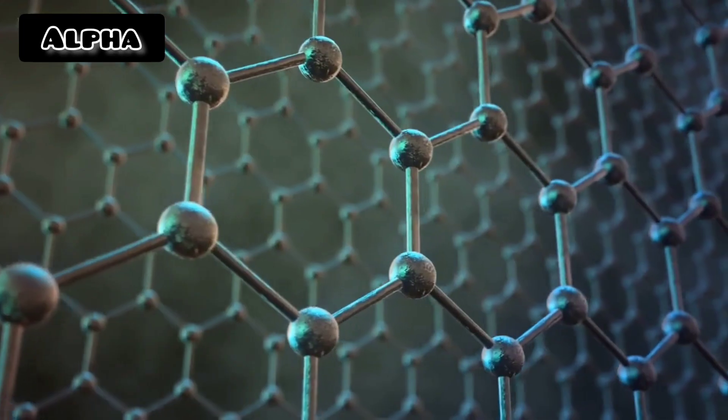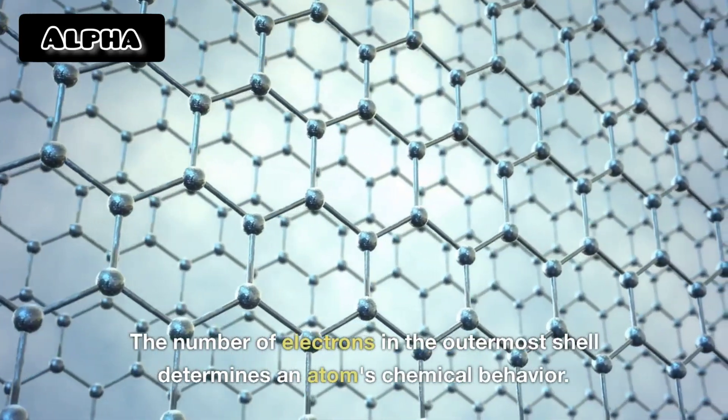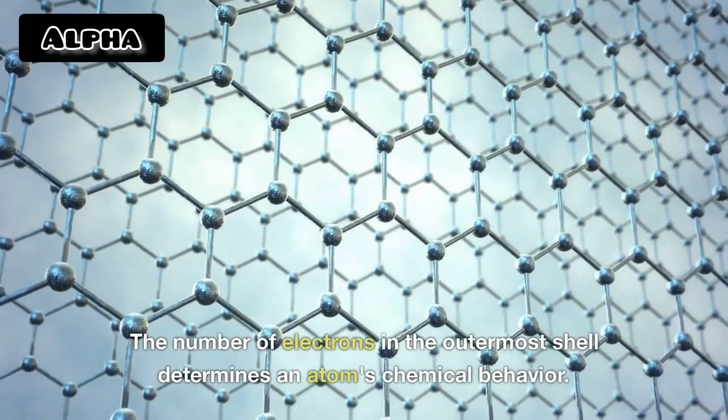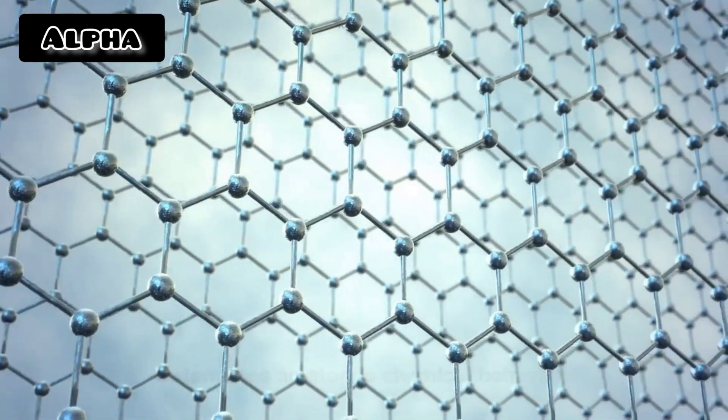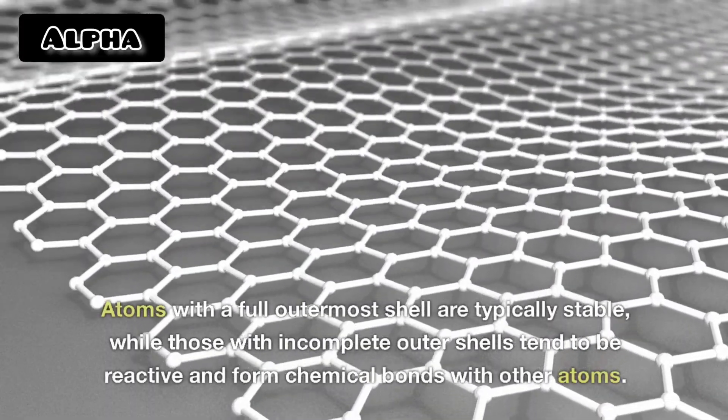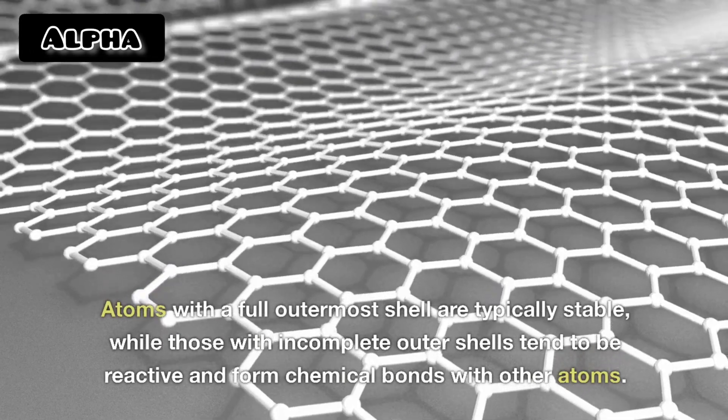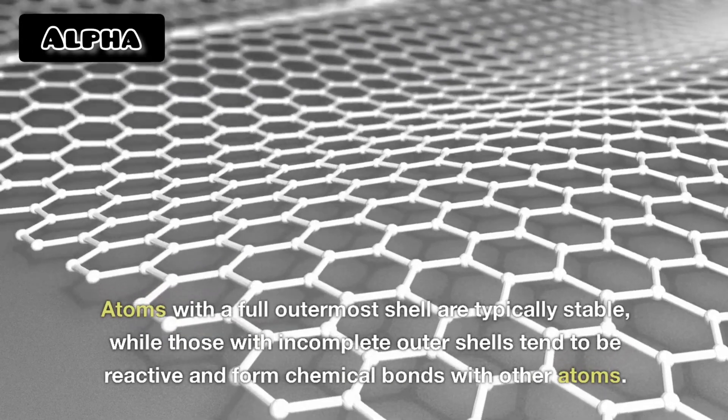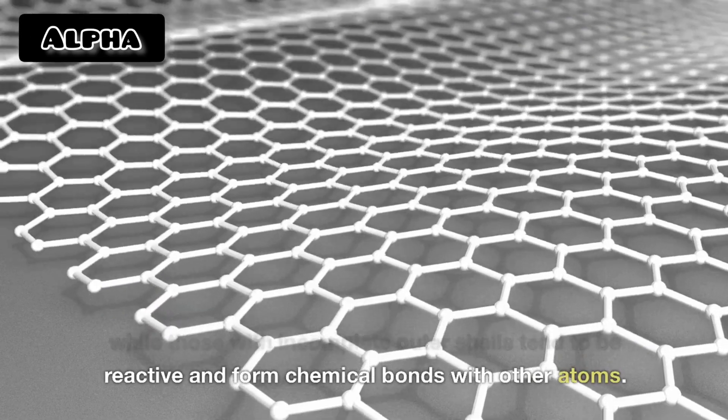The number of electrons in the outermost shell determines an atom's chemical behavior. Atoms with a full outermost shell are typically stable, while those with incomplete outer shells tend to be reactive and form chemical bonds with other atoms.